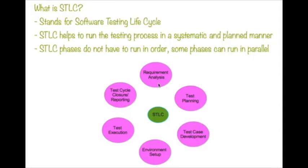The next phase is test execution. Testers test based on the test cases they wrote. If you're following Scrum methodology, you may not need to write formal test cases because the user story itself serves as the test case. In test execution, you follow those requirements, look into designs and other documents, and make sure the software matches what the customer or product owner defined.